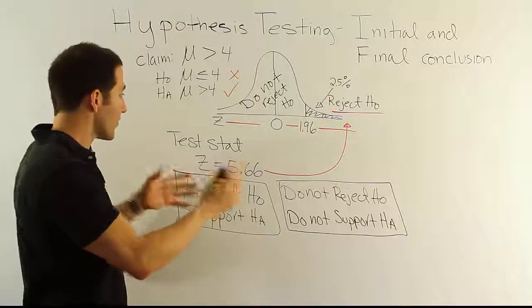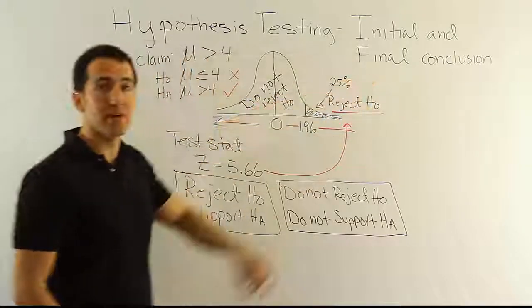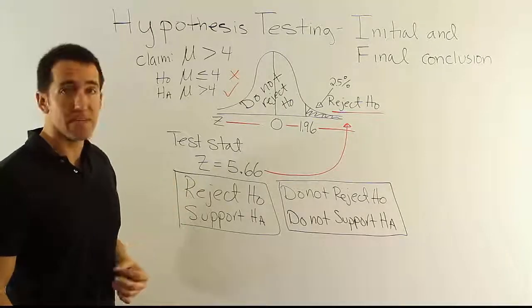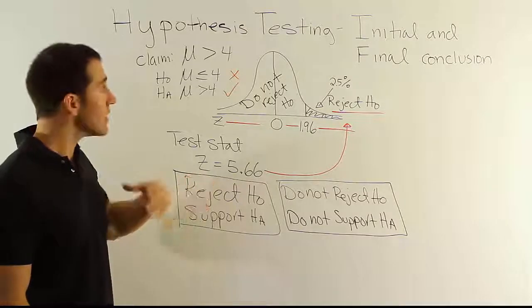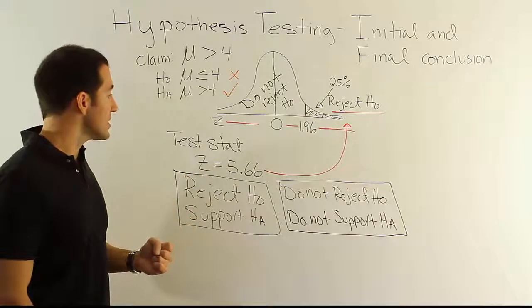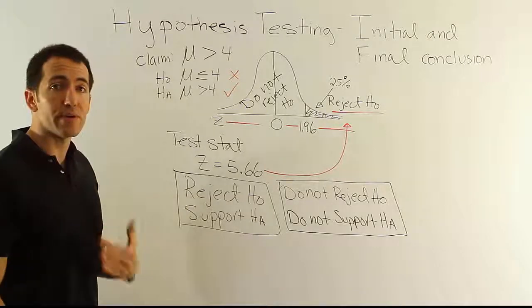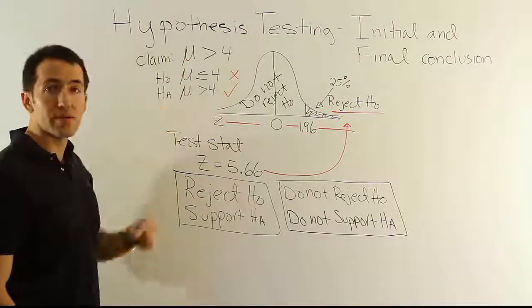Now, once you have one of those two possibilities, it's time to come up with a final conclusion. The final conclusion. And that's actually really simple. What we want to do to come up with a final conclusion is to just basically think in our heads a very simple idea, which is to say, what was the original claim? Make sure that you word your answer to reflect the original claim.